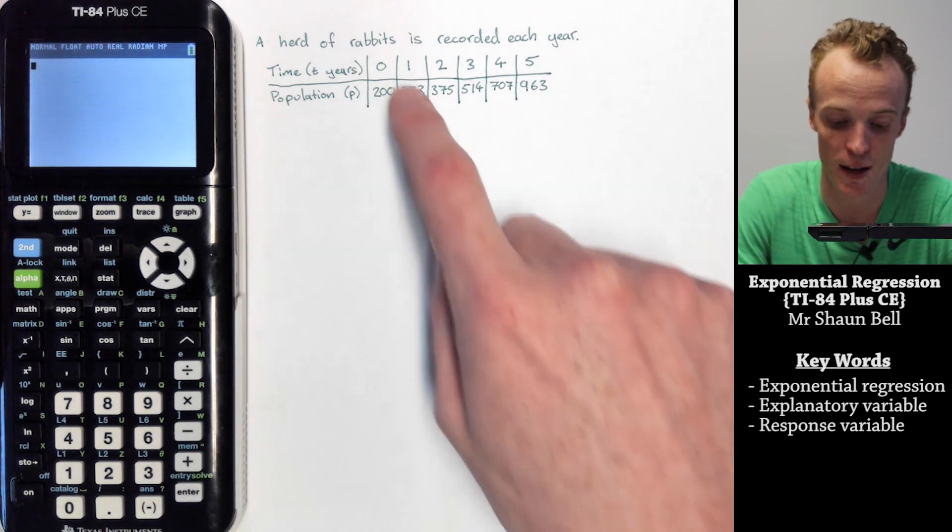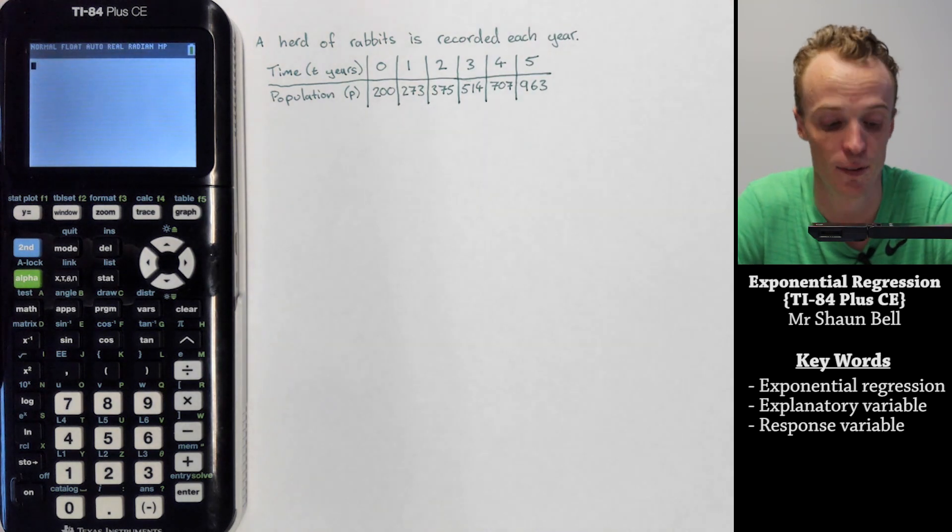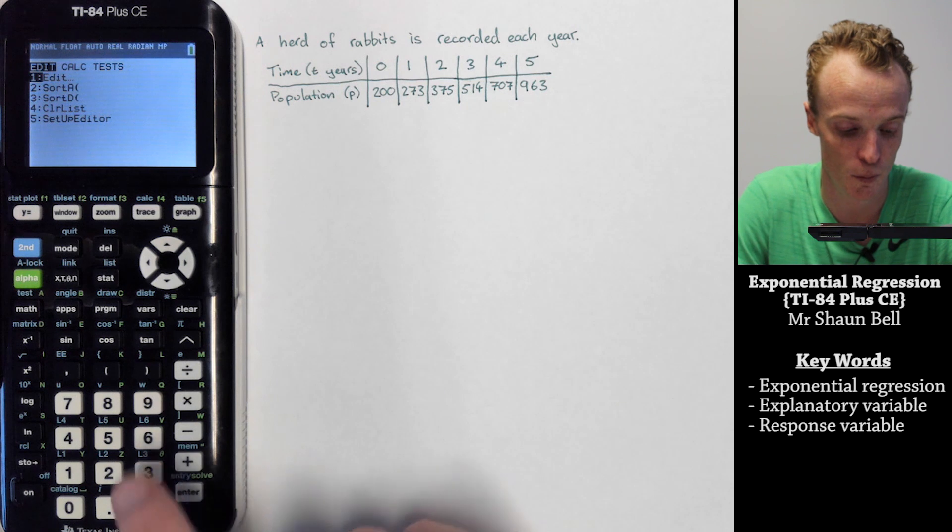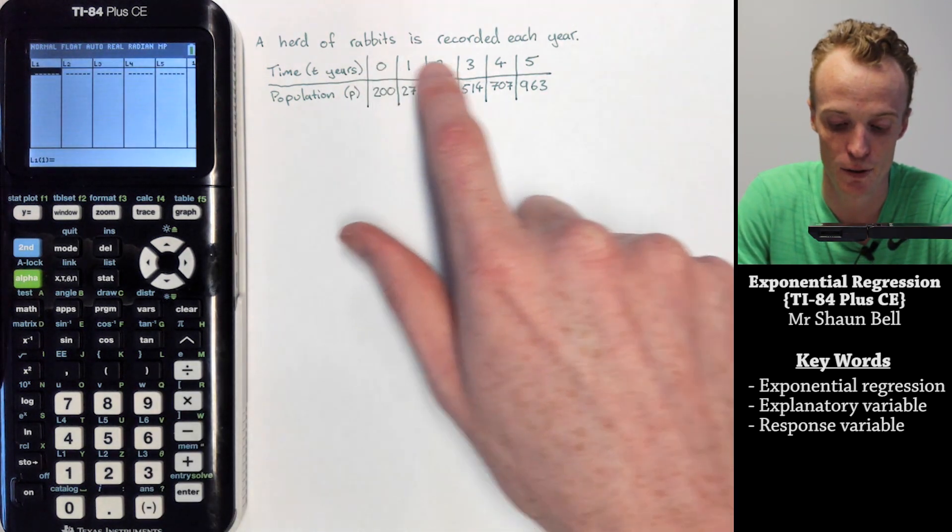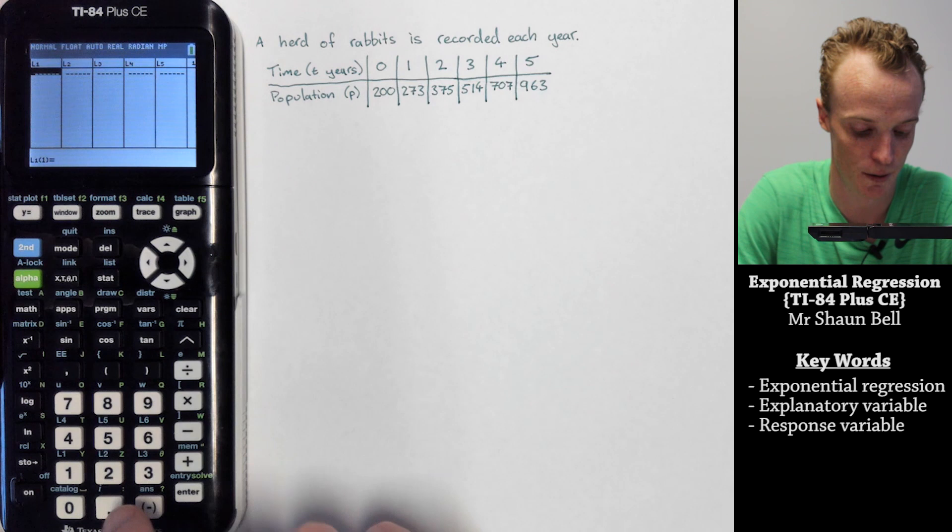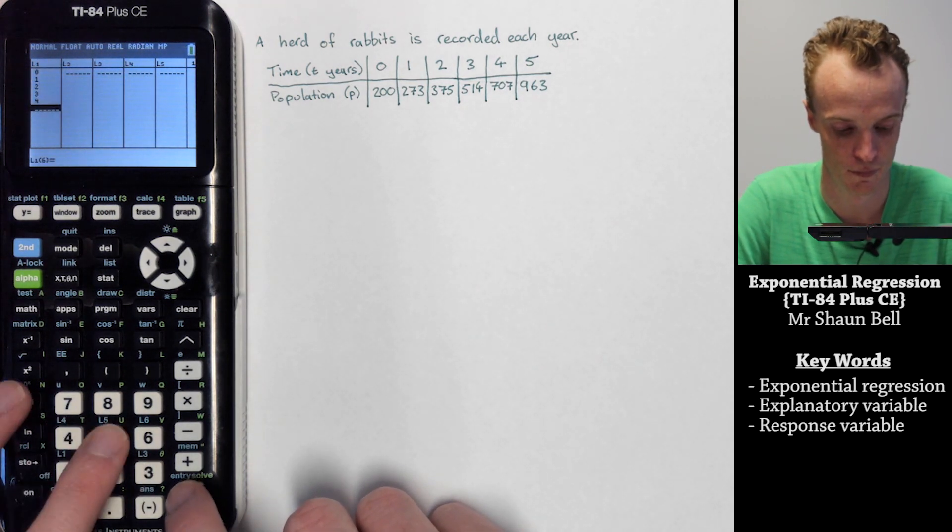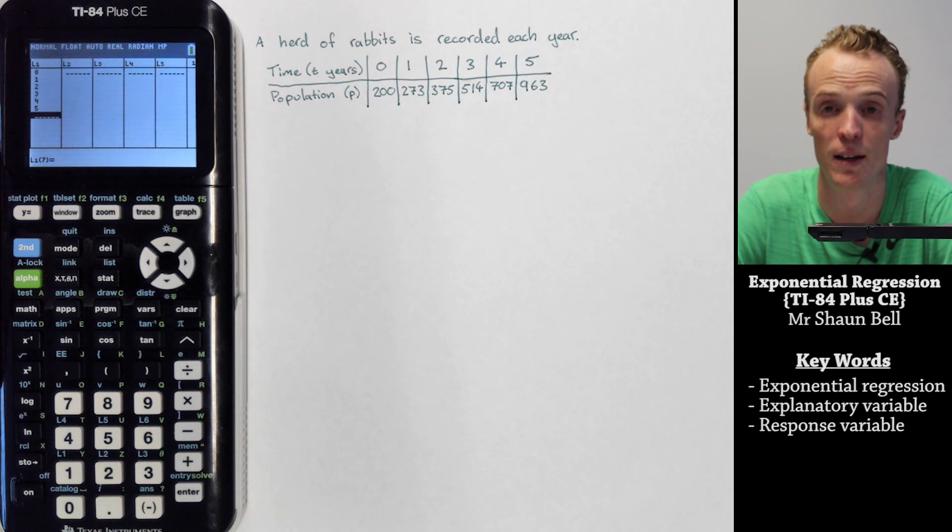To enter these X values into our calculator into a list, we first go to the stat button and hit enter. We enter these values here down in list 1 as I've done here.